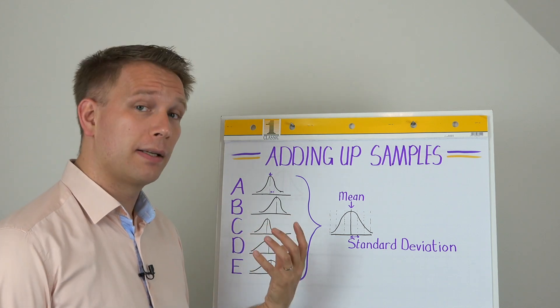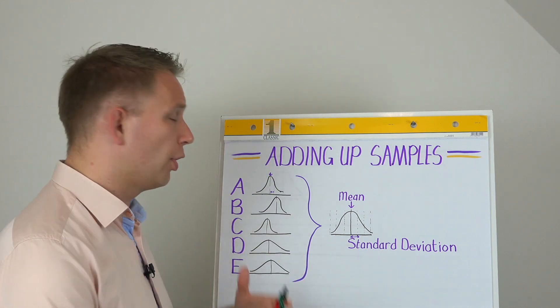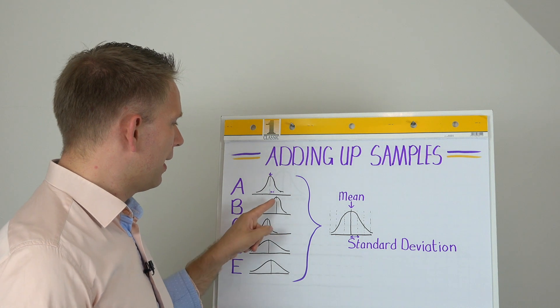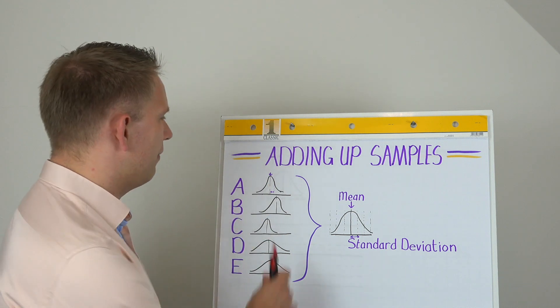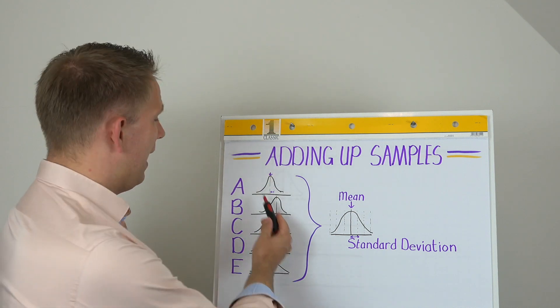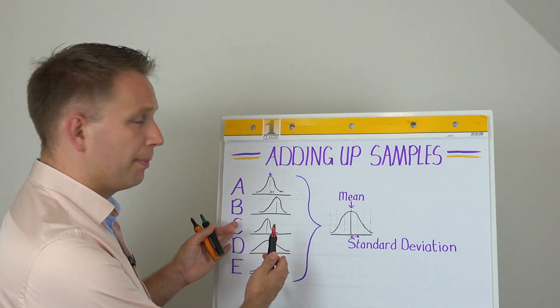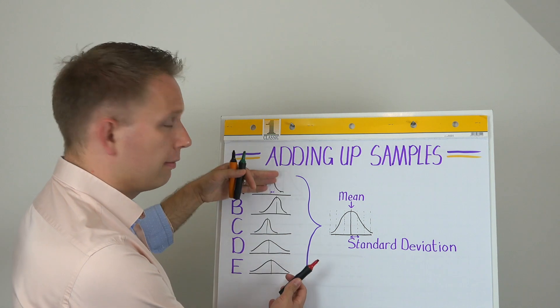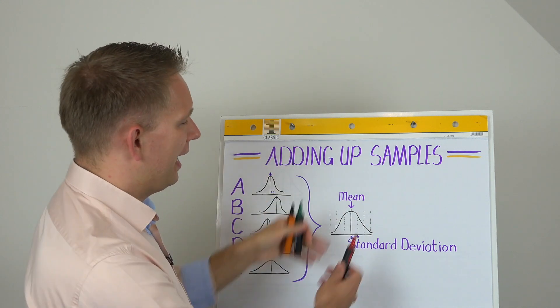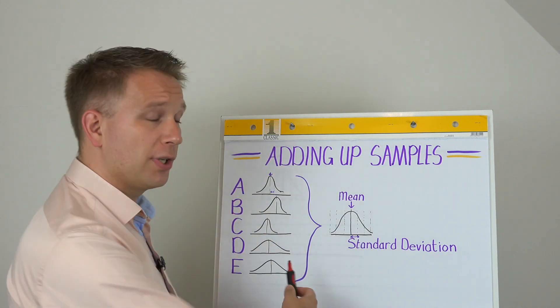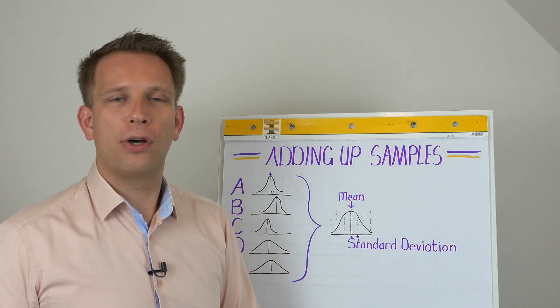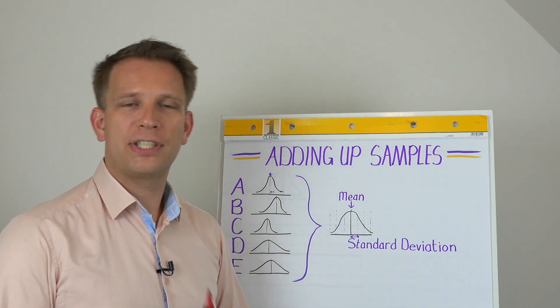We need to have the mean and the standard deviation of our samples. So here for each we do have this mean and we do have the standard deviation. But the question becomes, when we combine multiple, how do we get the mean and the standard deviation of all of them, or at least of a group of samples?